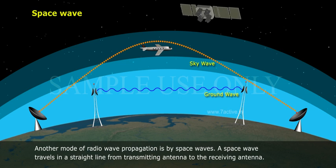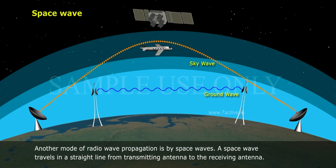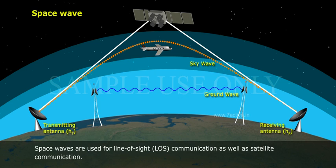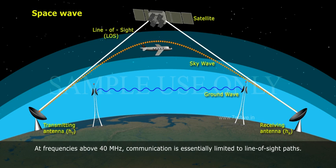Space wave: another mode of radio wave propagation is by space waves. A space wave travels in a straight line from transmitting antenna to the receiving antenna.